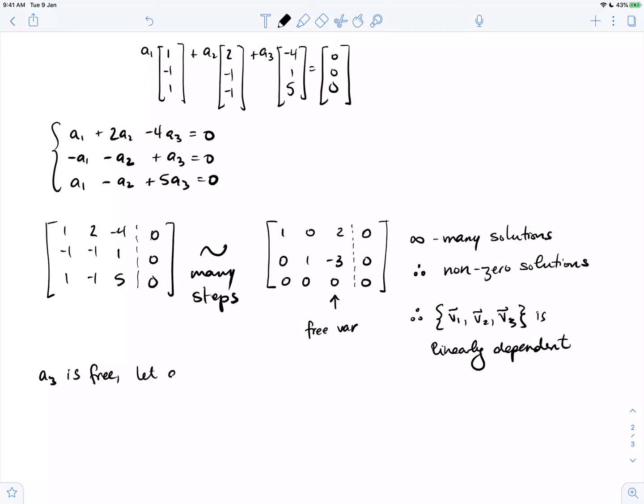We are going to let a3 be t for any t in R. We will then have that a1 is minus 2t, a2 is 3t, and a3 is t for any t in R.